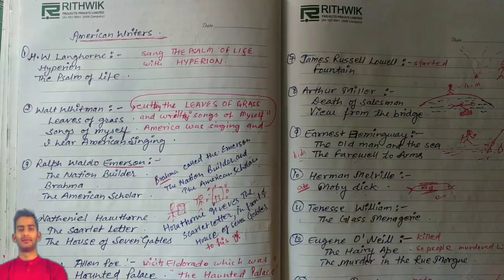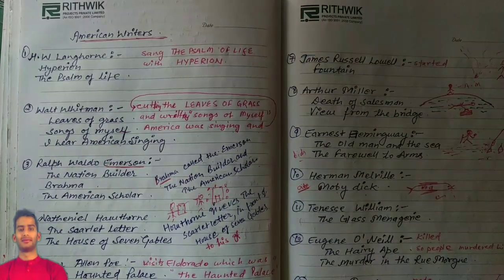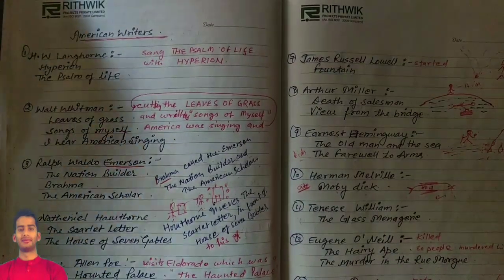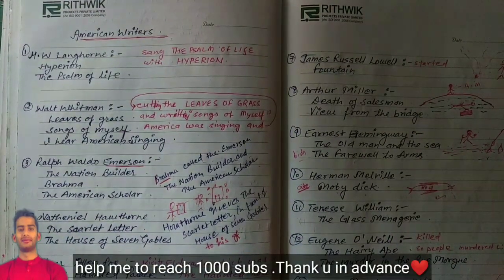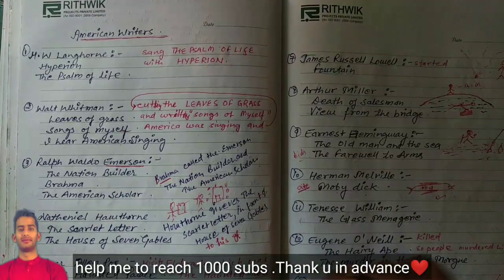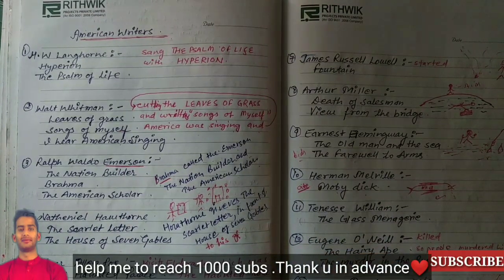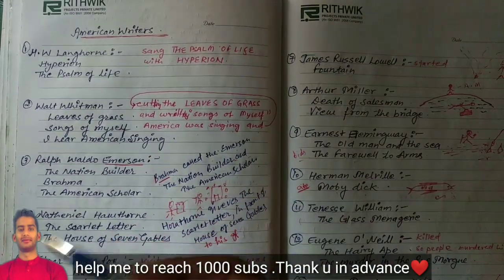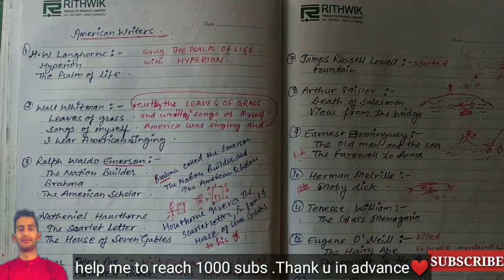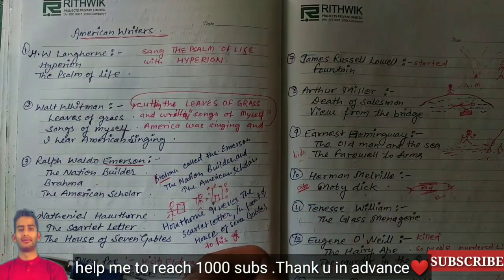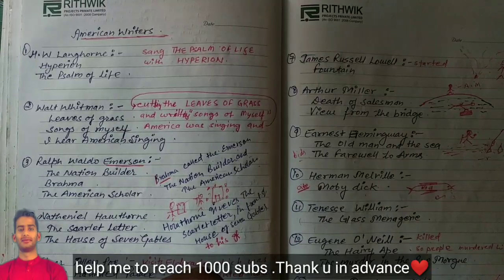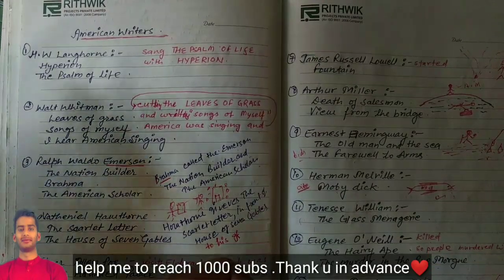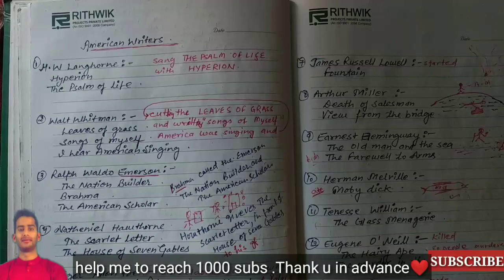Hello everyone, you are most welcome again on my channel. Today we are going to talk about some important American writers. If you are preparing for TGT, PGT, or UGC NET level, you must know these writers. For TGT and PGT level, just remember the names of the works, their publication dates, and important characters. For UGC NET, you need to prepare all of these in depth.